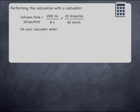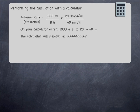To perform the calculation with a calculator, enter 1,000, divided by 8, multiplied by 20, divided by 60, and then press equals.